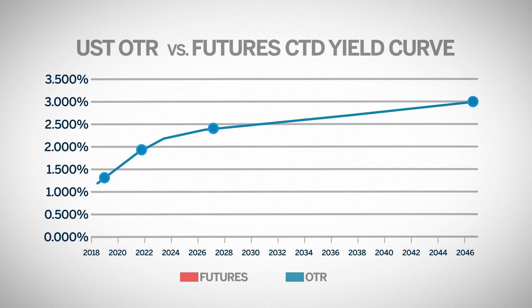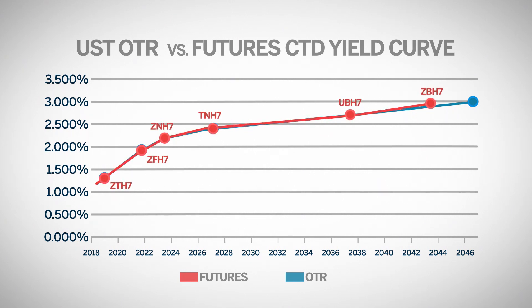CME Group offers futures contracts on U.S. Treasuries that provide an effective and capital efficient substitute for cash U.S. Treasury notes and bonds. Because CME lists multiple contracts along the yield curve, traders can express a point of view on outright interest rates or express a view on the slope of the yield curve. CME Group lists U.S. Treasury futures contracts with effective maturities at the two-year, five-year, seven-year, ten-year, twenty, and twenty-five-year points along the yield curve.